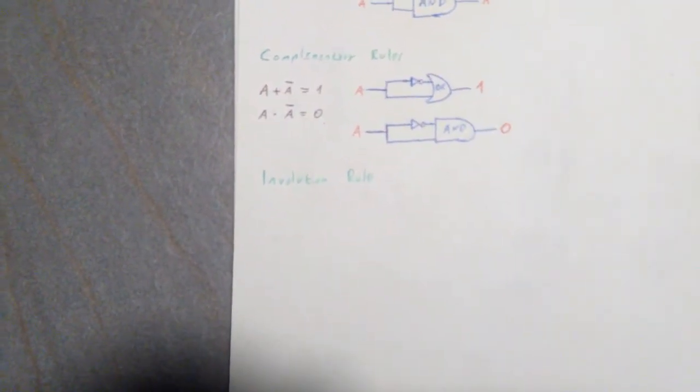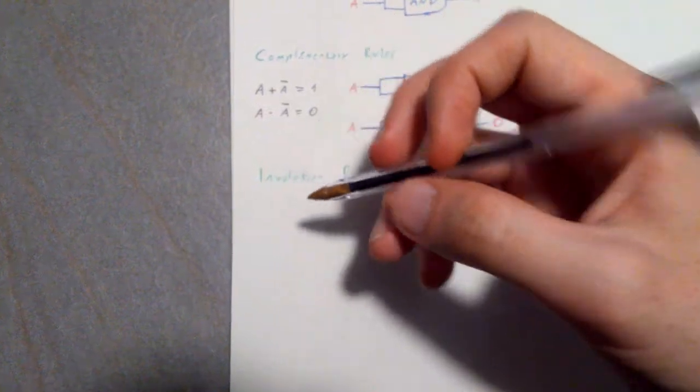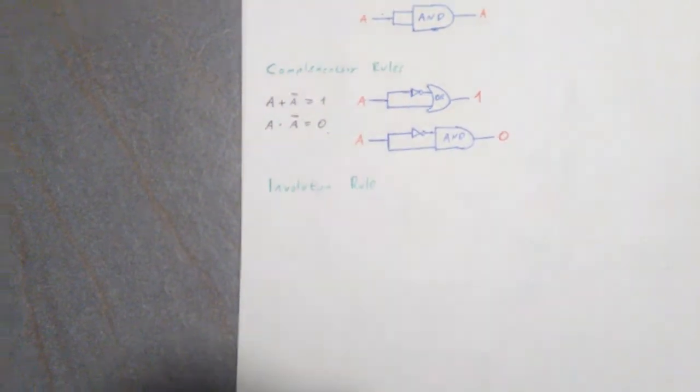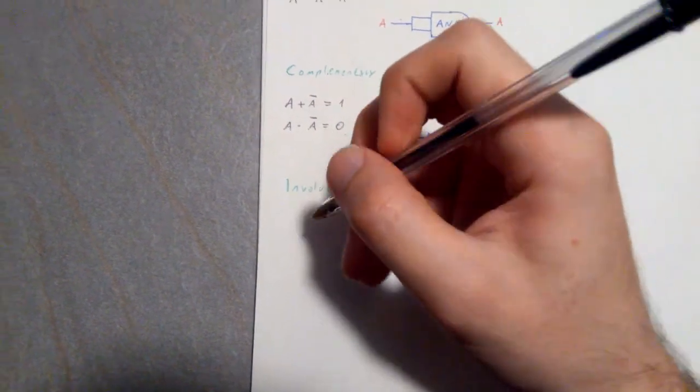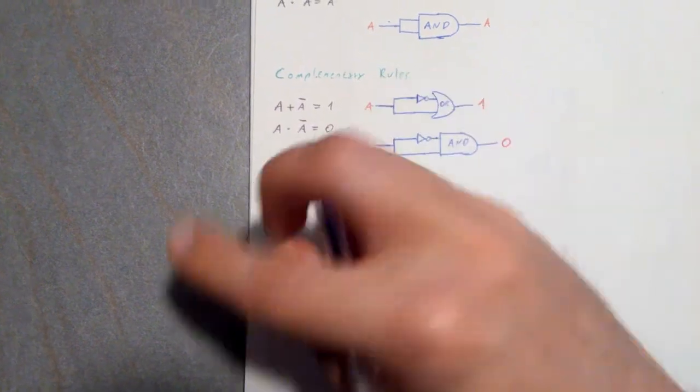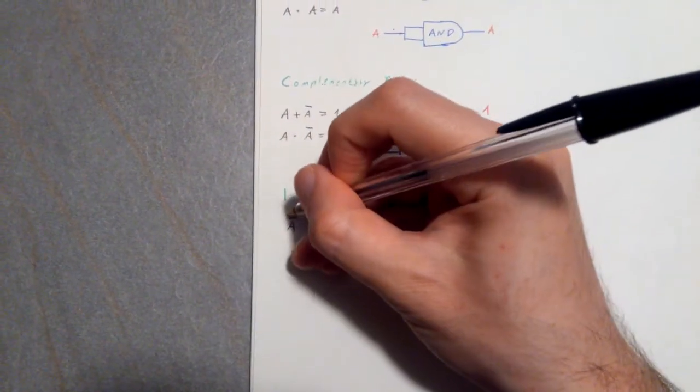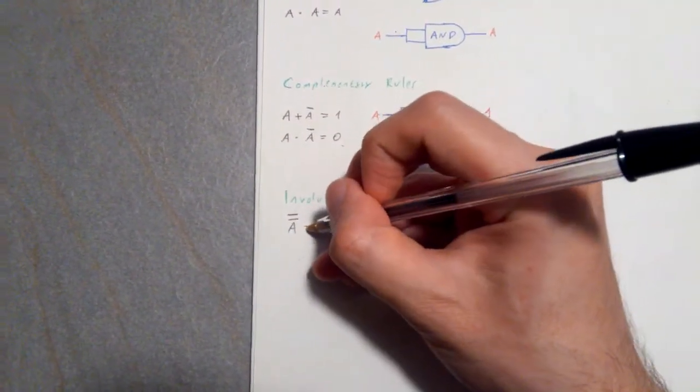What does it mean? Well, as soon as I write it, you're gonna see that it's really trivial. So if you have A with a double NOT, then it's gonna be equal to A.